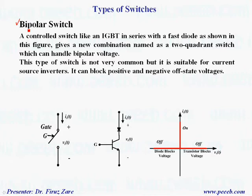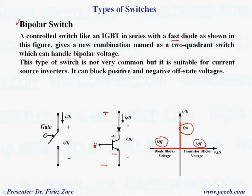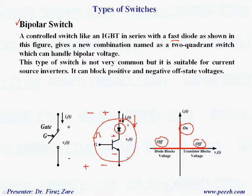Bipolar switch: a control switch like an IGBT in series with a fast diode can operate in these quadrants — it can block positive and negative voltage and conduct positive current. If the voltage across the diode and switch is positive, the switch blocks positive voltage when there is no gate signal. If the voltage across the switch is negative, the diode blocks negative voltage. When the current is positive and we apply the gate signal, the switch handles positive current. This combination of diode with IGBT or MOSFET operates in these two quadrants.